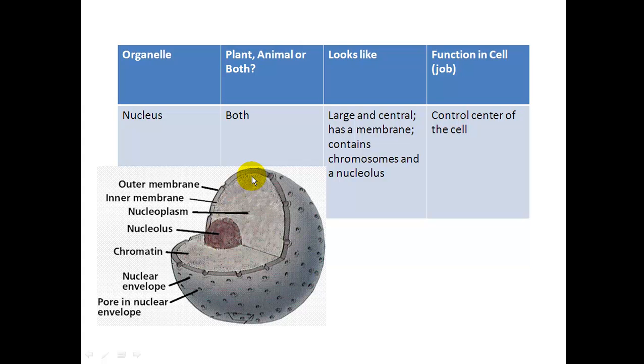The nuclear membrane is also called the nuclear envelope. So both plant and animal cells both have a nucleus. However, prokaryotic cells do not. So they look like a large, and they're usually in the middle of the cell. They have a membrane, and they contain chromosomes and the nucleolus in there. And its job is to control the cell. They basically overtake the cell and make sure everything is working properly.